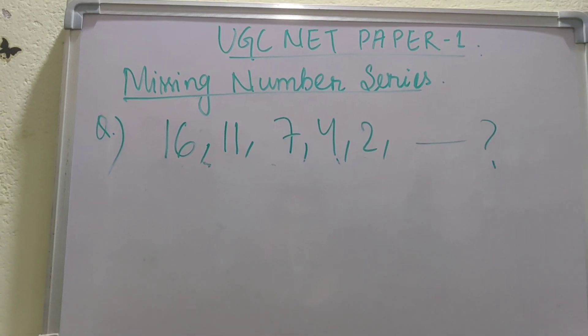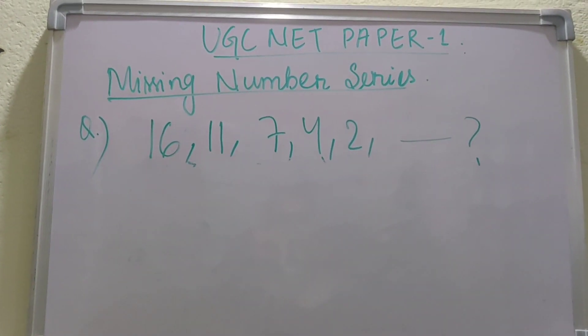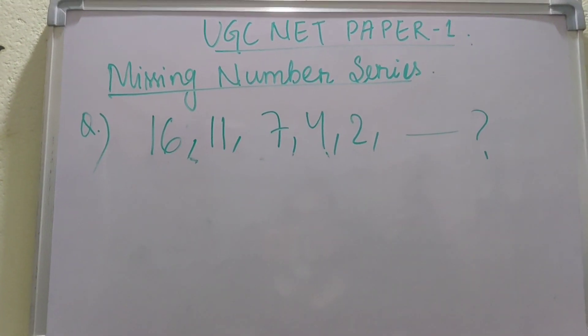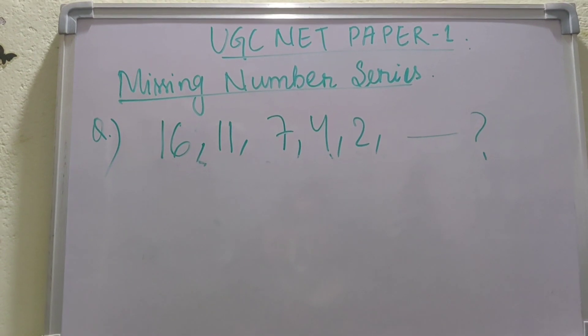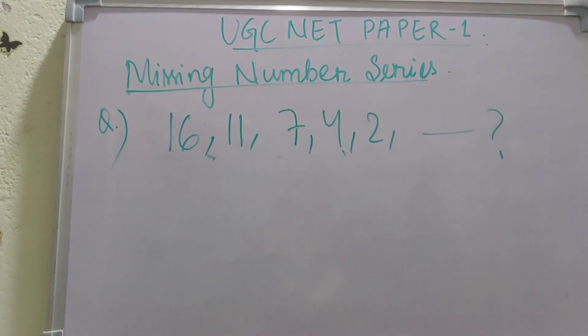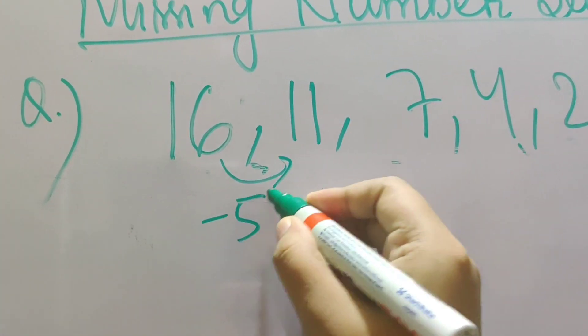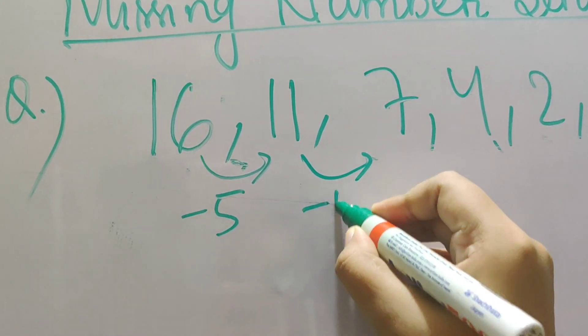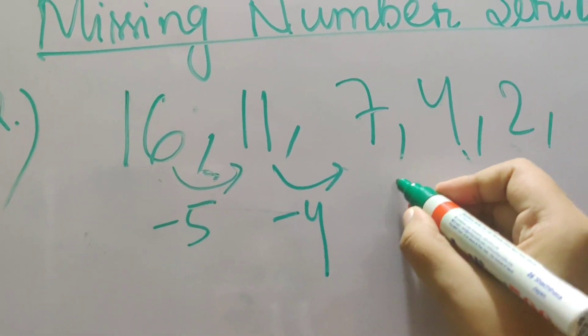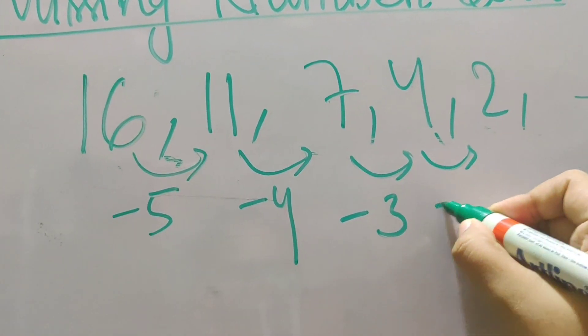This is the next missing number series. Here we see a set of numbers comprising of 16, 11, 7, 4 and 2. Here we cannot observe any pattern which is related to square or cube of anything. So let us start by simply subtracting and see what happens. So we know 16 minus 5 is 11. Similarly 11 minus 4 is 7, 7 minus 3 is 4, and 4 minus 2 is 2.